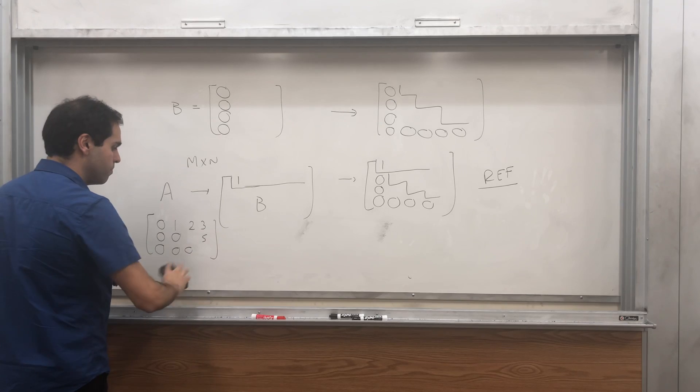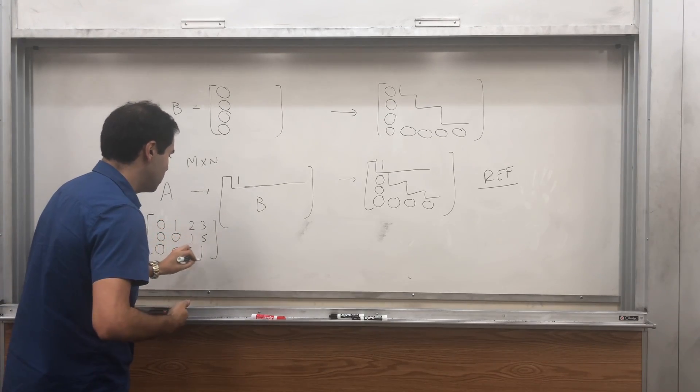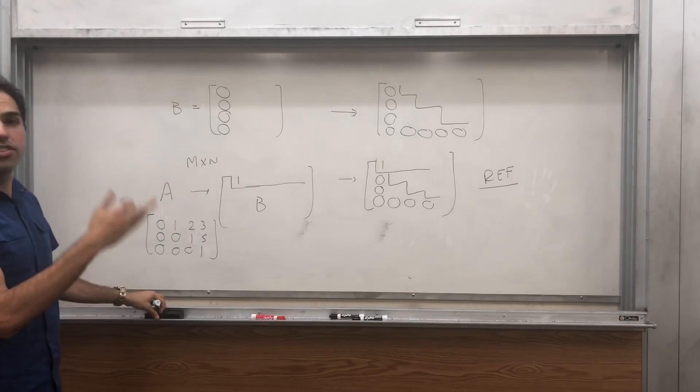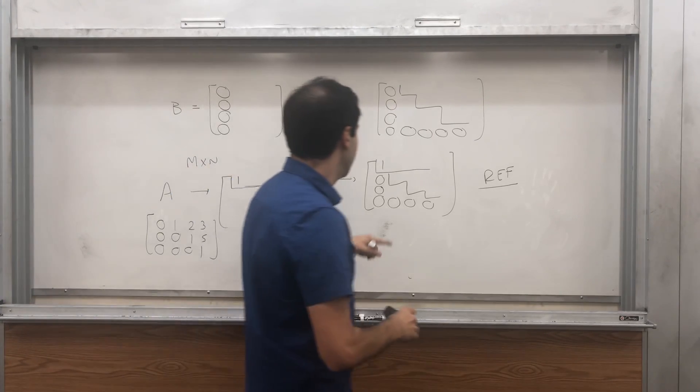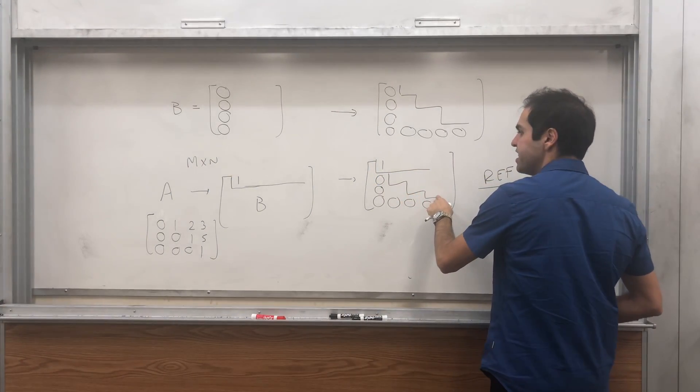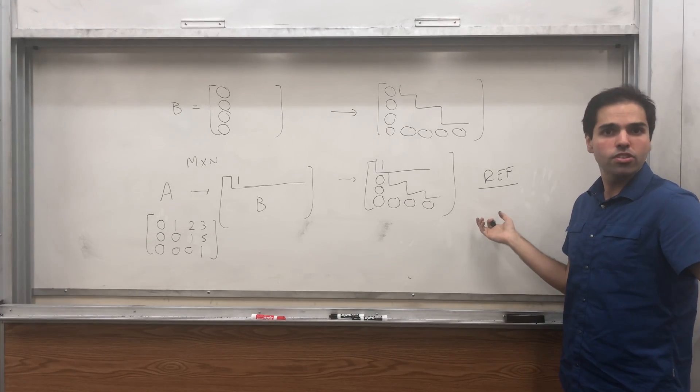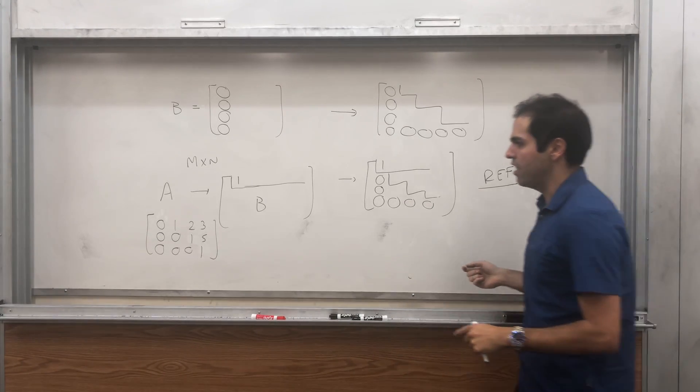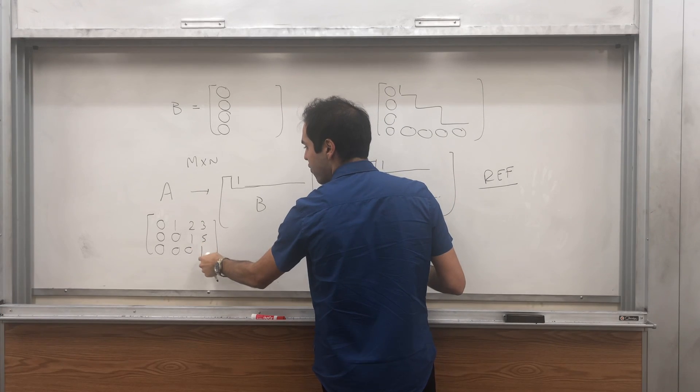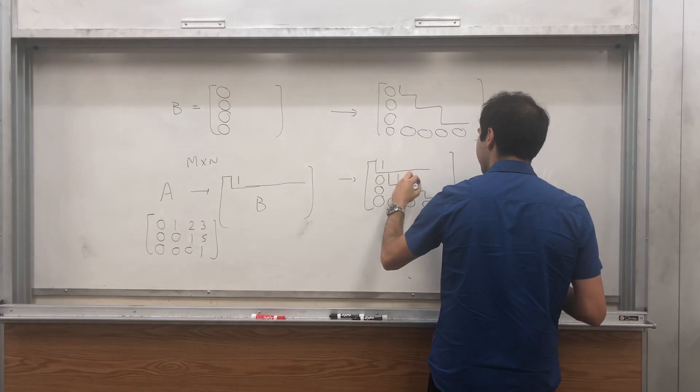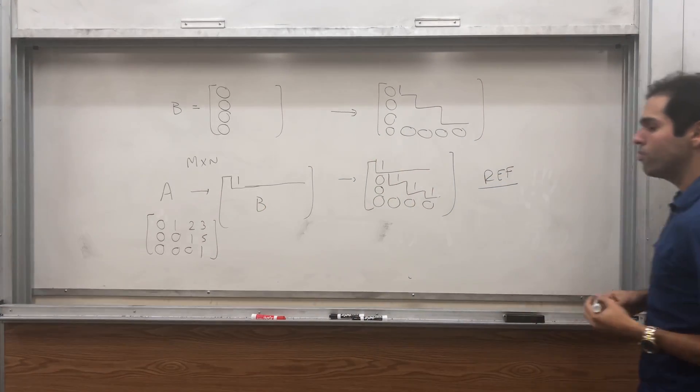So reduced just means, first of all, the pivots are 1. Let's say here are 1. And it's not hard to do, because by definition, the pivots here are non-zero. So if you want the pivots to be 1, just divide by their values. Like here, you would divide by 4. Here, you would divide by 6. So we get a bunch of 1s.